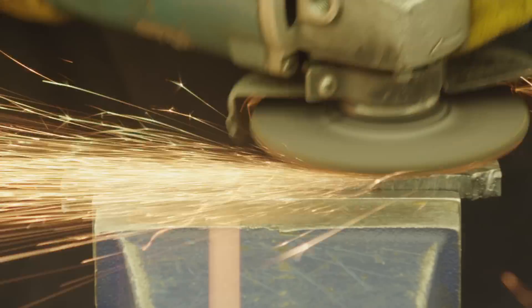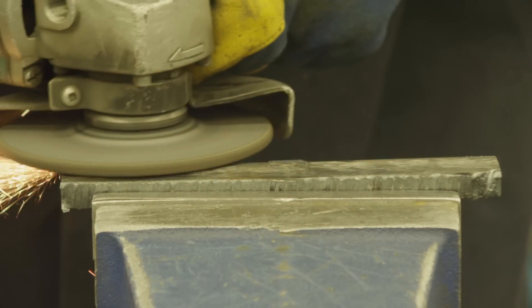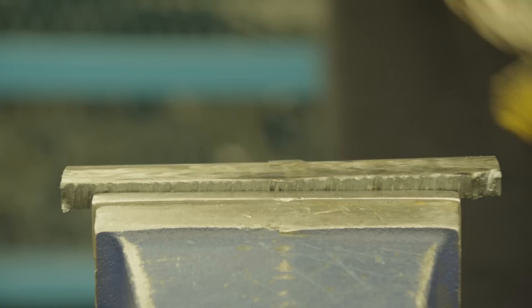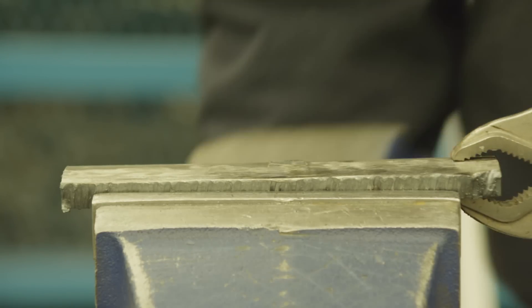Remember, excessive grinding below the nominal thickness of the pipe will result in the failure of this test and is considered an attempt to conceal faults in your weld.